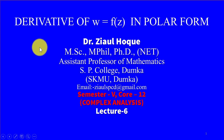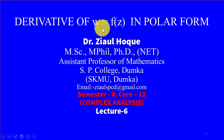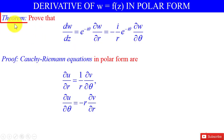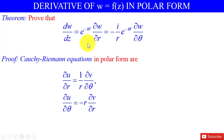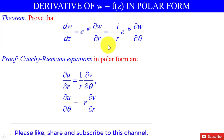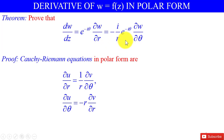Hello everyone, we are going to learn about the derivative of w = f(z) in polar form. The theorem states: prove that dw/dz = e^(-iθ) · ∂w/∂r = (-i/r) · e^(-iθ) · ∂w/∂θ.